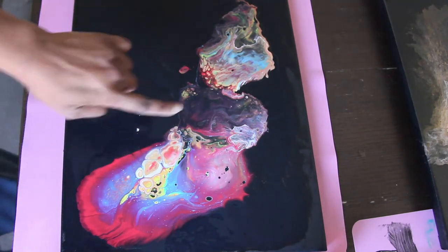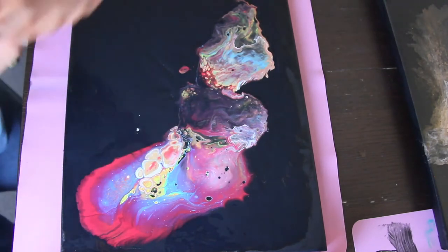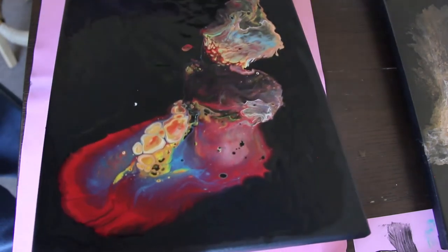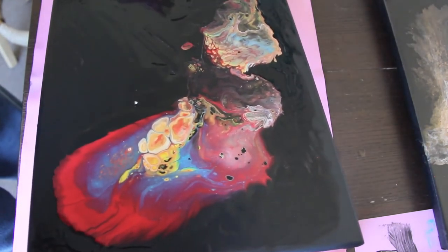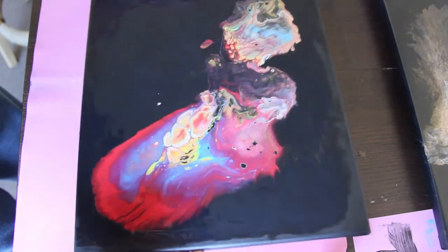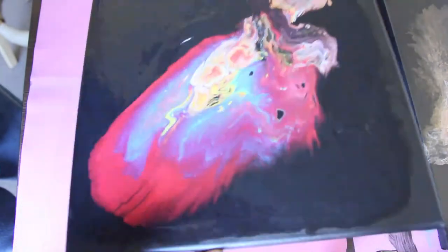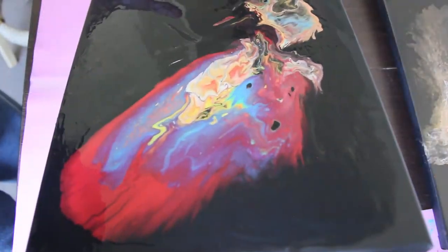I really want the paint to move kind of into the middle so I'm going to stick to my good old basics and continue to tilt the canvas for the paint to spread and then use a straw to blow out some of the paint.